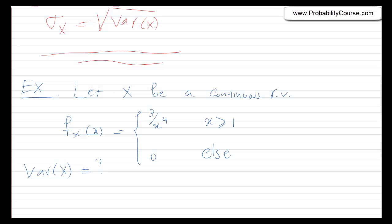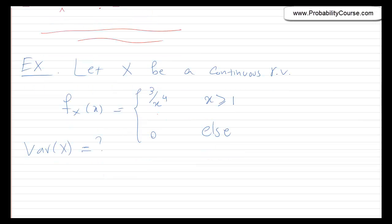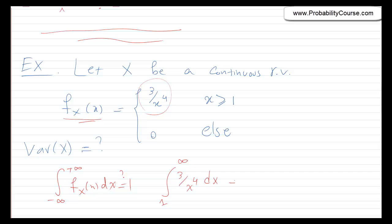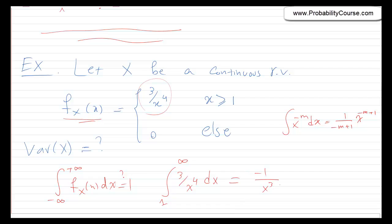Before solving this, let's first check that this is a valid pdf. It's positive, so that's good. We also need to check that the integral from minus infinity to plus infinity of f_X(x) dx equals 1. This becomes the integral from 1 to infinity of 3 over x to the 4 dx. Using the power rule, this equals minus 1 over x cubed, evaluated from 1 to infinity. Putting in infinity gives 0, and putting in 1 gives minus 1, so the whole integral equals 1. The pdf integrates to 1.